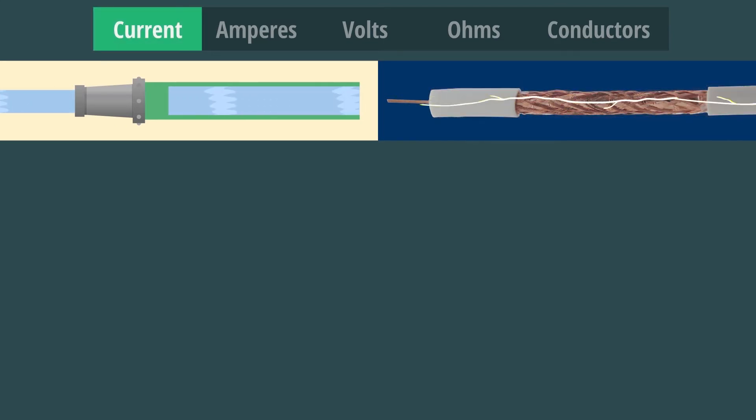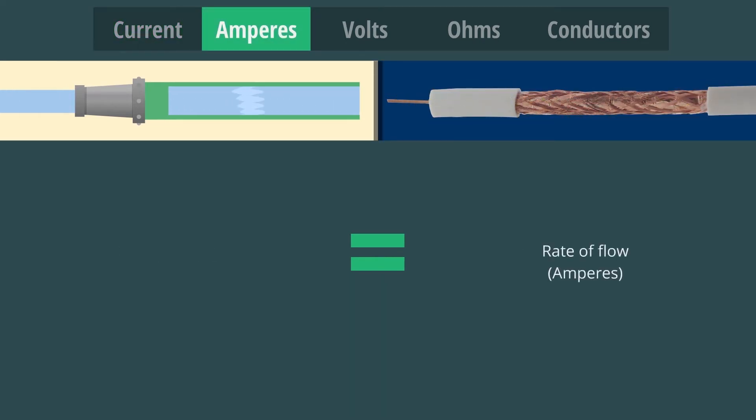Electrical current may be thought of as the amount of electricity flowing in a wiring system, like the amount of water flowing through a garden hose. The rate of flow of electricity, or current, is measured in amperes.